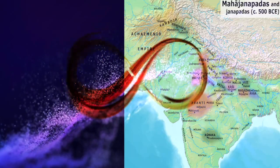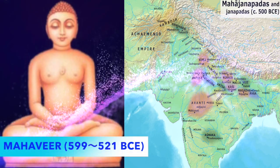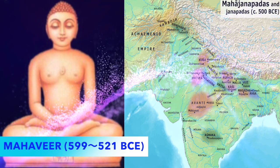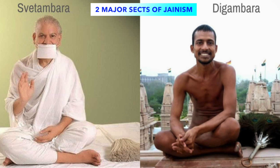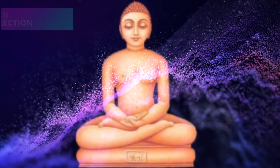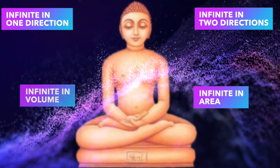One of the first historical observations of infinity takes us to India with the 24th and last Tirthankara, or prophet, of the Jain religion. His name was Mahavir, and he lived between 599 BCE and 521 BCE. The Jains were the first to distinguish between things that go on without ending and things that are truly limitless. Even more interestingly, they had different dimensions of limitlessness: infinite in one direction, in two directions, in area, in volume, and infinite perpetually.